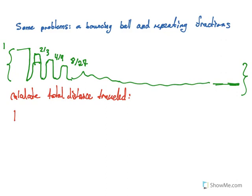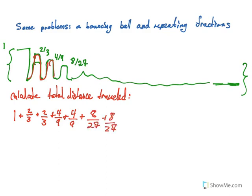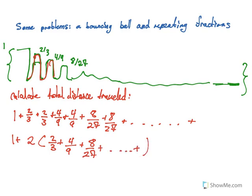Let's start writing out all the terms and figure out what we have to do. Our initial drop height is one. It's going to bounce and rise up to two-thirds. Once it rises up to two-thirds, it's going to drop down again two-thirds. Then it's going to bounce, go up four-ninths, and then drop four-ninths. This is going to happen again for the entirety of the infinite series. So we can rewrite this as one plus two times the values in our infinite geometric series, and of course there are going to be more terms. Now we can use the equations we derived earlier to solve this.